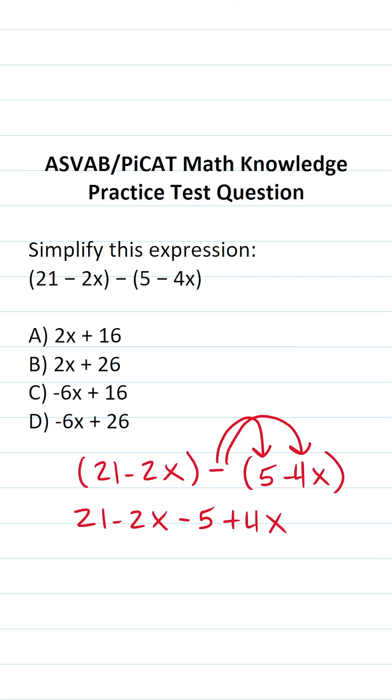All right, so now we have to simplify this expression by combining like terms. We have 21 minus 5 which is going to be 16, and then we have negative 2x plus 4x. That's the same thing as 4x minus 2x which is plus 2x, and we're always going to write an expression like this with the letter variable first, so it's going to become 2x plus 16.